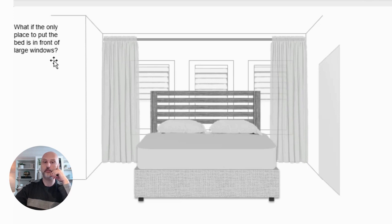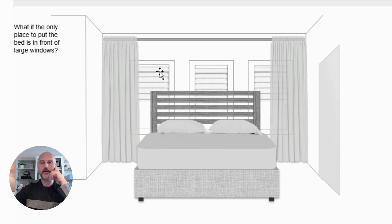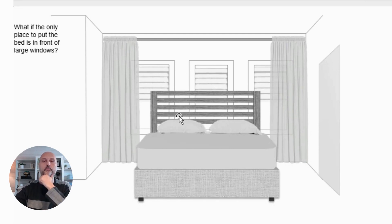So that is design dilemma number one: what if the only place to put the bed is in front of the windows? Even up uneven windows with drapery panels, add Roman shades or blinds for light control and privacy, and don't block the window with anything solid. Choose something open — like a metal or slatted wood headboard — so light can still come through.